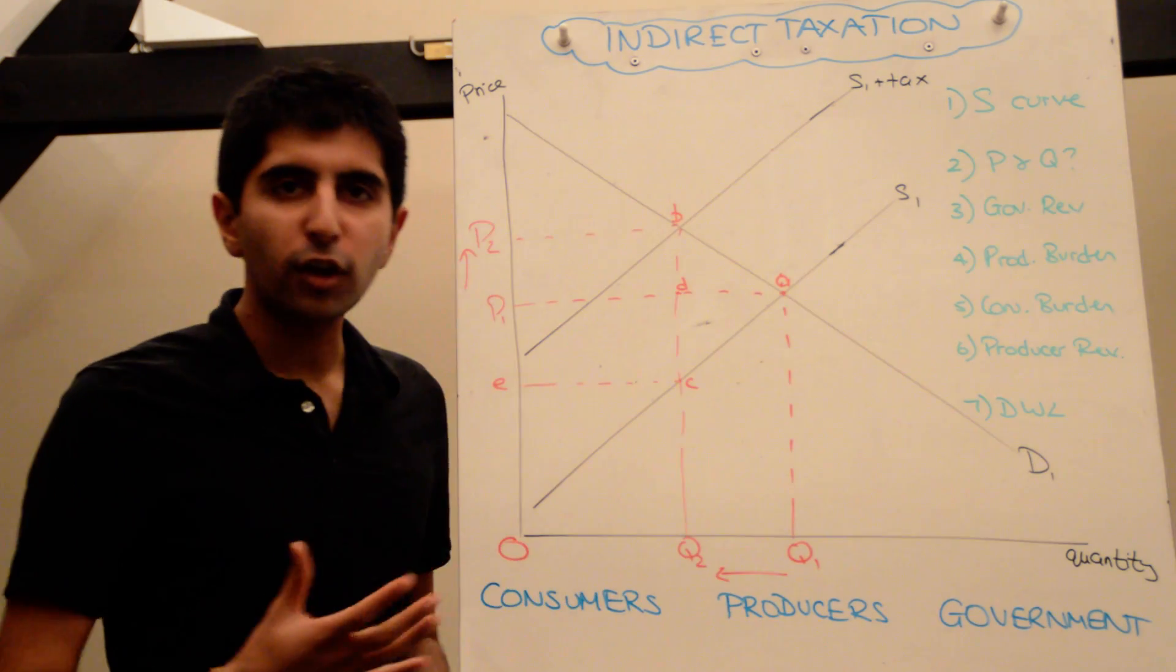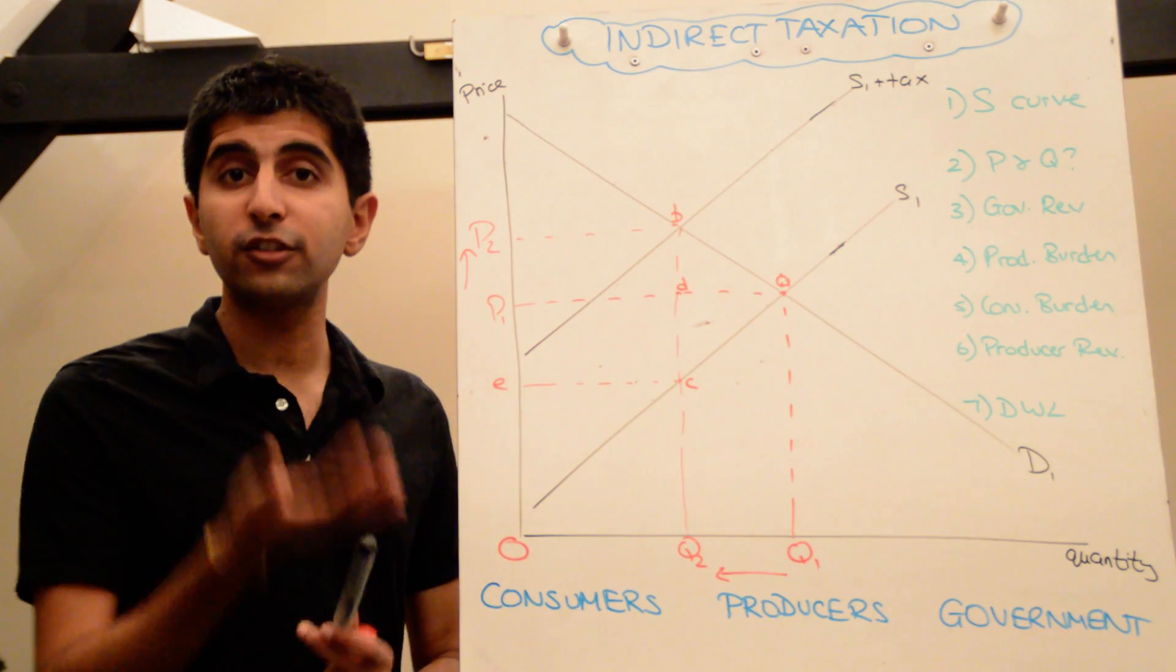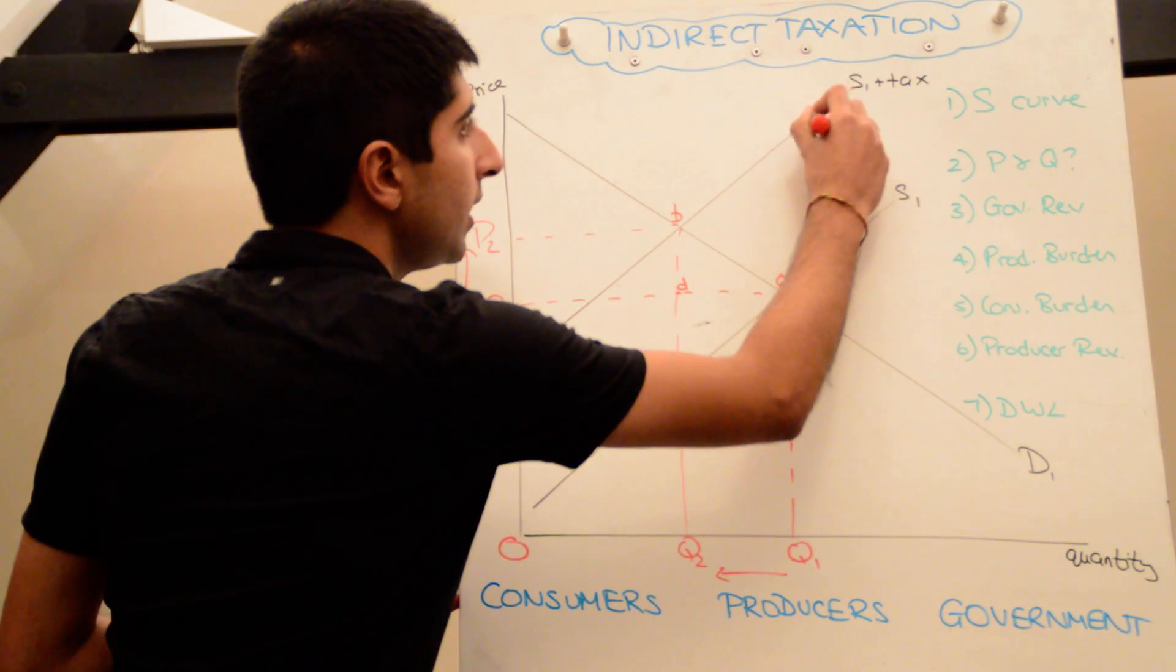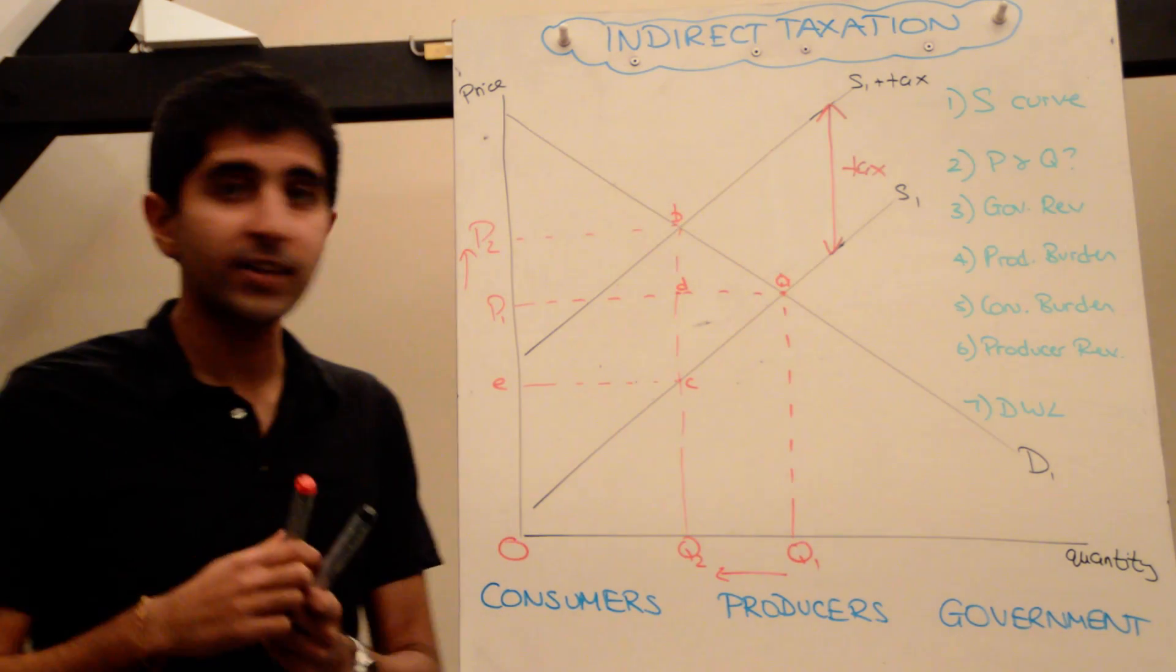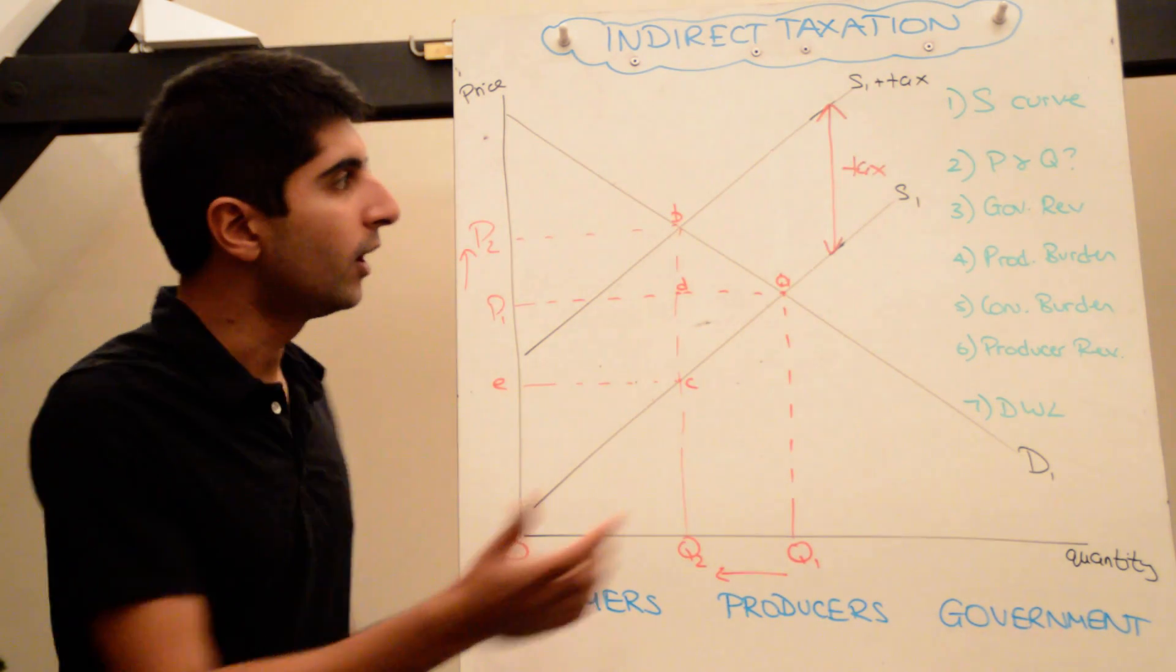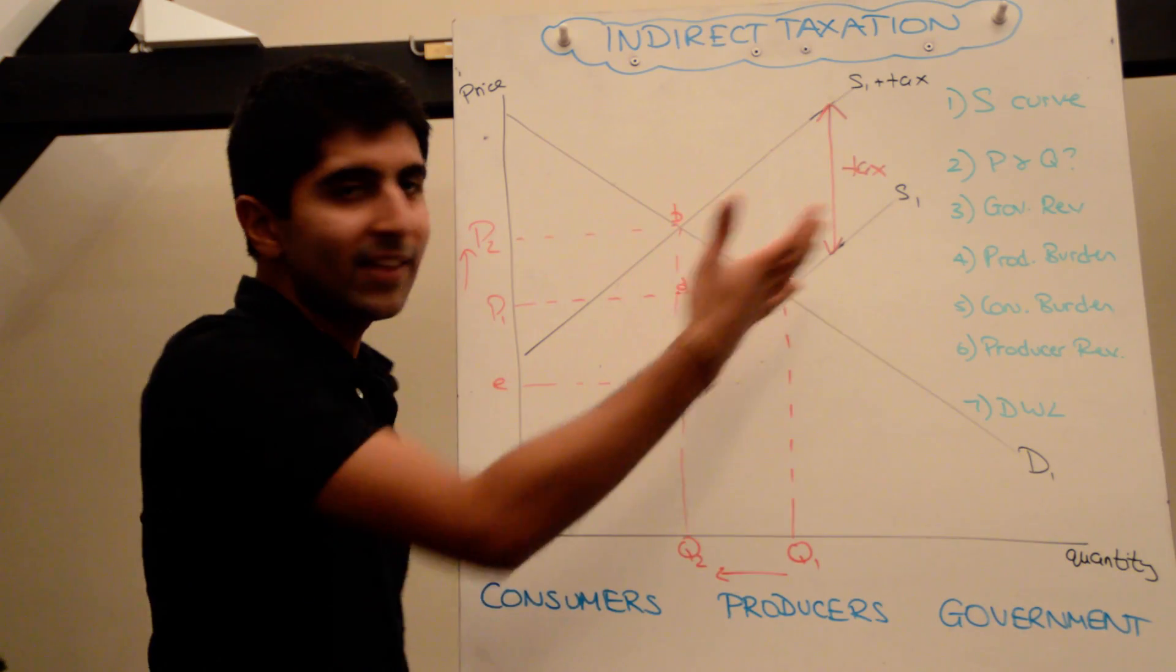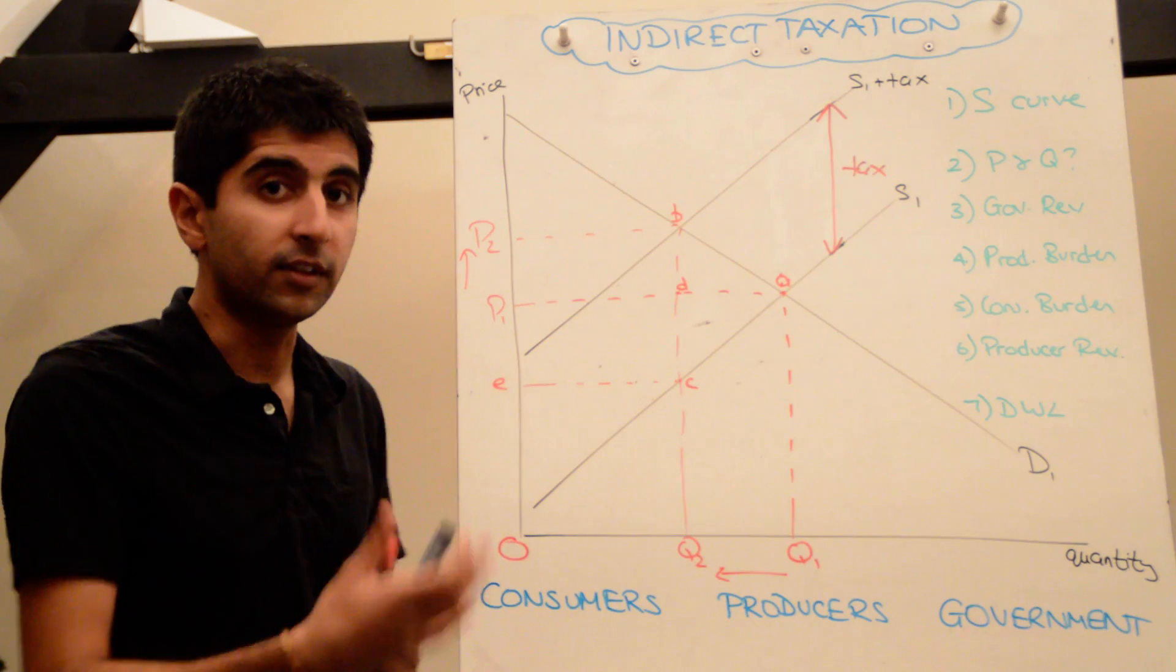I've drawn the basic diagram that you should be aware of: a tax increasing the cost of production for a firm, thus shifting the supply curve upwards from S1 to S1 plus tax. You should also be aware that the vertical distance between the two supply curves is the value of the tax. So here we're working with a specific tax, an indirect tax, which per unit sold is exactly the same value. What I want to do here is isolate the impacts from different stakeholders in the market and then finish with the end outcome to society, which is a deadweight loss.